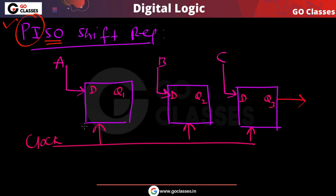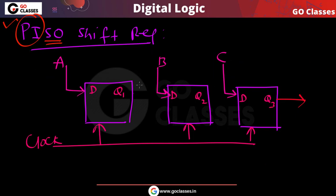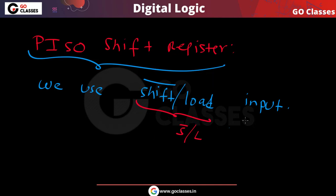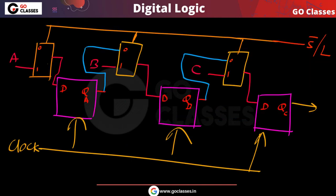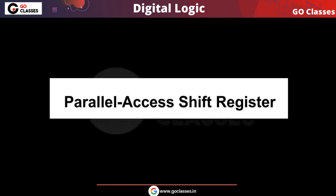So in the PISO register: when S̄L = 1, we load data into the register in parallel; when S̄L = 0, we do shift right and read the data serially. This completes the parallel input serial output shift register.